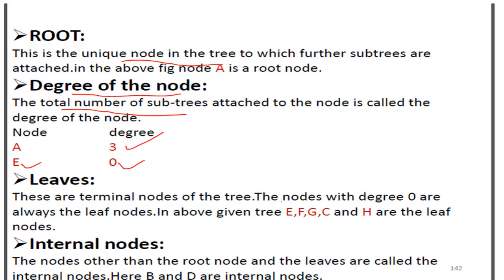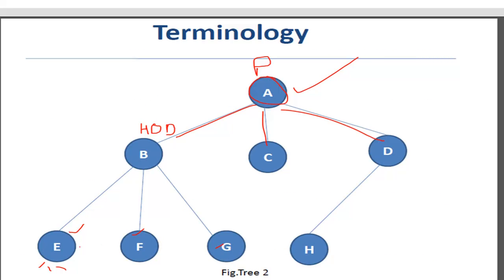Next is leaves, also called terminal nodes. Leaf nodes are identified as nodes with degree zero — nodes that have no subtrees. In the above example, E, F, G, C, and H are leaf nodes.